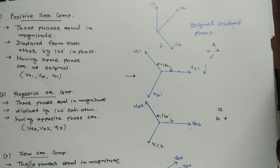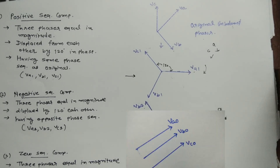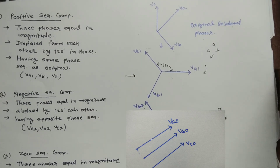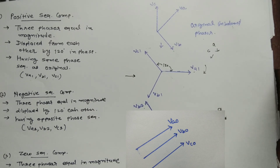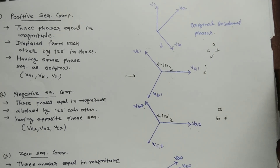The third one is the zero sequence component. In this sequence component, the magnitude is equal — VA0, VB0, and VC0 are equal in magnitude — but the displacement between each phase is zero. All three phasors are in phase with each other. That is the symmetrical component, which is a very important topic in power systems.